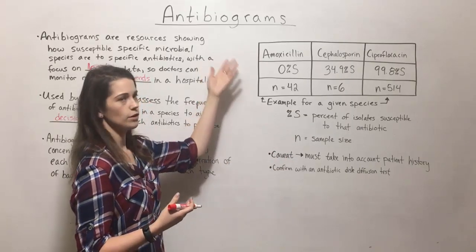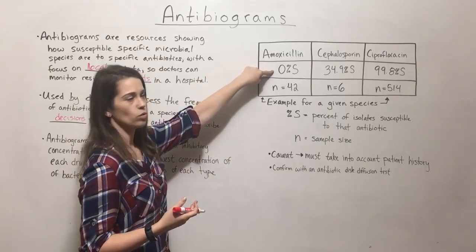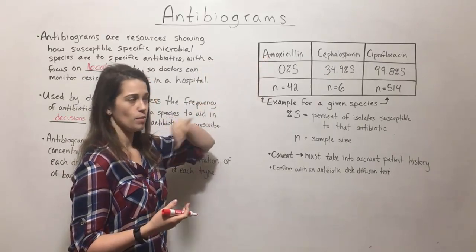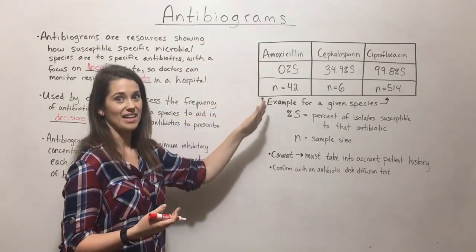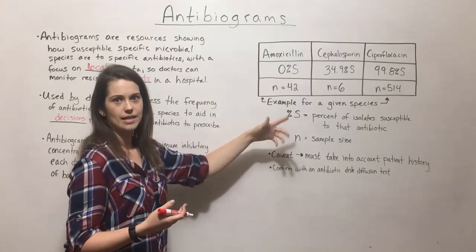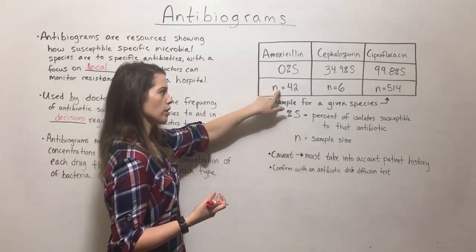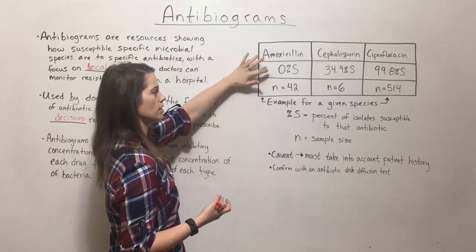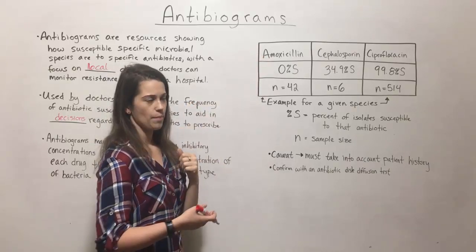We can see that for whatever species this is, 0% were susceptible to amoxicillin, so amoxicillin wasn't effective against any of those isolates. N is the sample size — how many isolates have been tested. So with 42 isolates taken from 42 patients, amoxicillin didn't work against any of them.